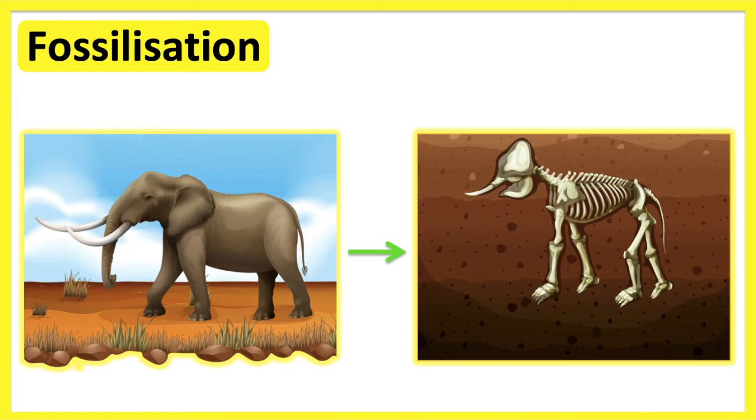Over time, more layers of sediment form on top. The sediment around the skeleton starts to compact and turn into rock.